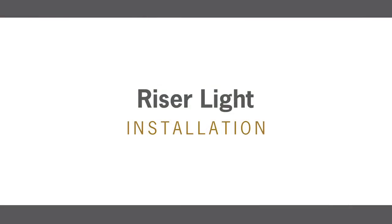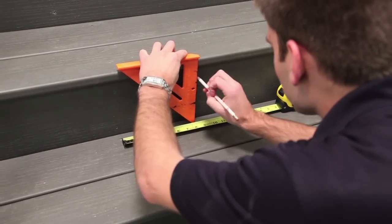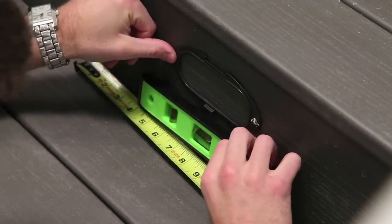Next, let's install a riser light. Locate and mark vertical and horizontal center lines for the riser light location. Level the backplate and secure using the 1-inch screws.